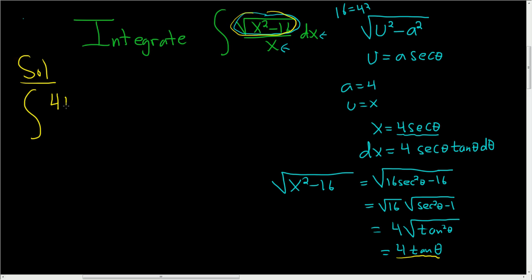So 4 tangent theta. We've also worked out dx as 4 secant theta tangent theta d theta, so that's going to be 4 secant theta tangent theta d theta.